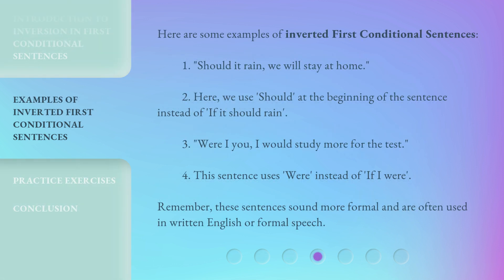Here are some examples of inverted first conditional sentences. 1. 'Should it rain, we will stay at home.' Here, we use 'should' at the beginning of the sentence instead of 'if it should rain.' 2. 'Were I you, I would study more for the test.' This sentence uses 'were' instead of 'if I were.' Remember, these sentences sound more formal and are often used in written English or formal speech.